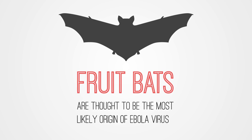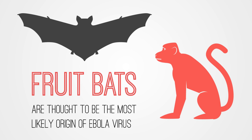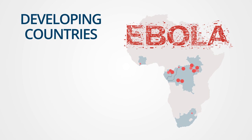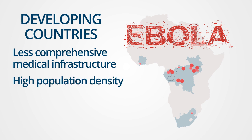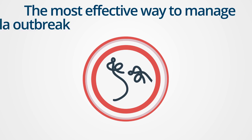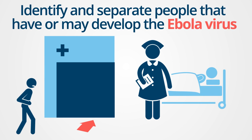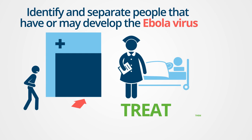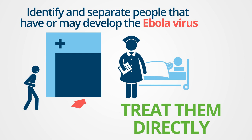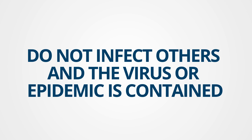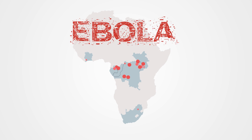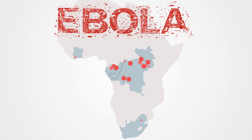Ebola outbreaks occur predominantly in Africa. African fruit bats are thought to be natural hosts for the virus, which in turn has spread to other wild animals. Additionally, due to the way the Ebola virus is spread, developing countries with less comprehensive medical infrastructure, high population density, and poor sanitation are at greater risk. The most effective way to manage or stop an Ebola outbreak is to identify and separate people that have or may develop the Ebola virus and treat them directly, so they do not infect others. This remains difficult to consistently put into practice in affected African countries.